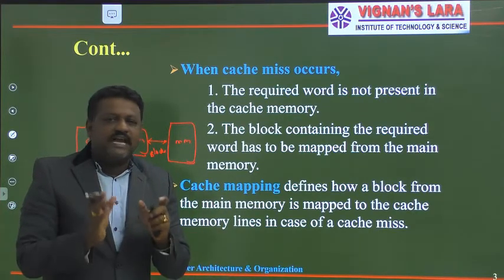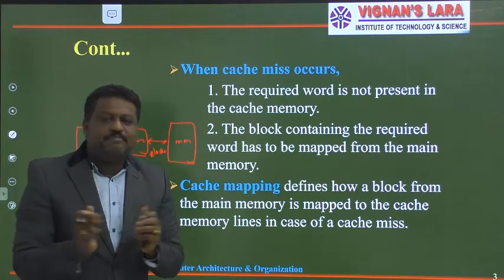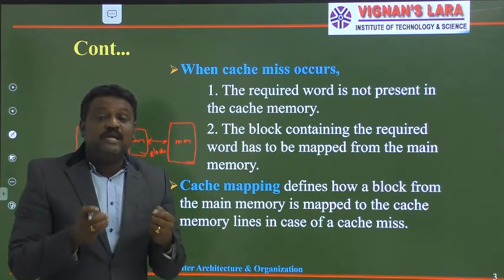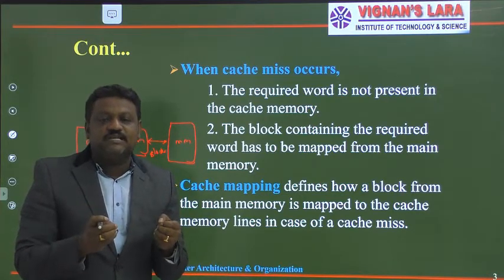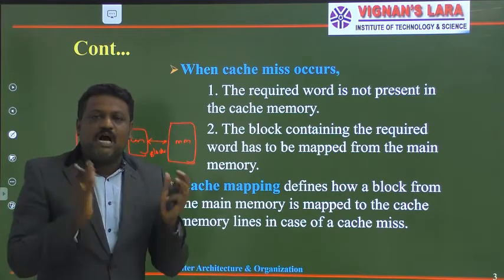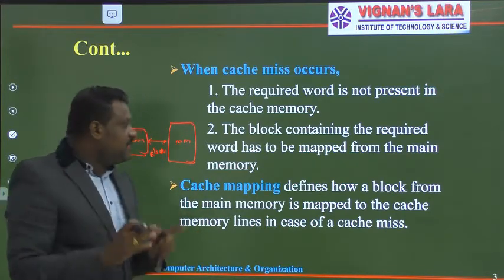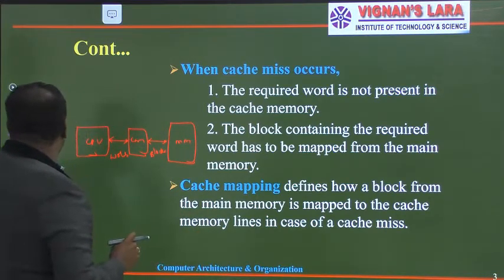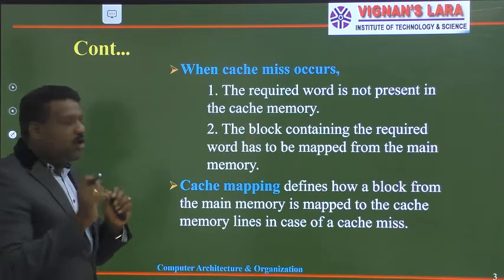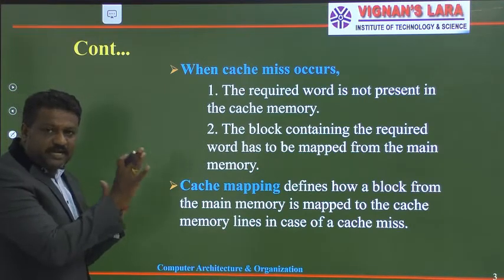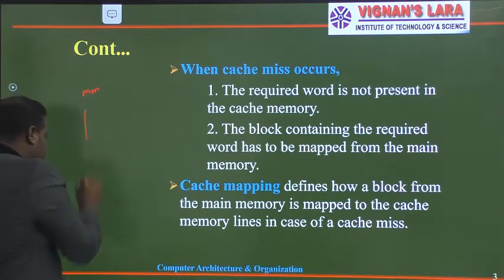Cache memories are smaller, faster, and one important thing is there are no empty spaces or empty locations in cache — the cache memory is always full with data. The organization of our cache memory and main memory is like this. The main memory has a set of locations divided into a number of blocks.